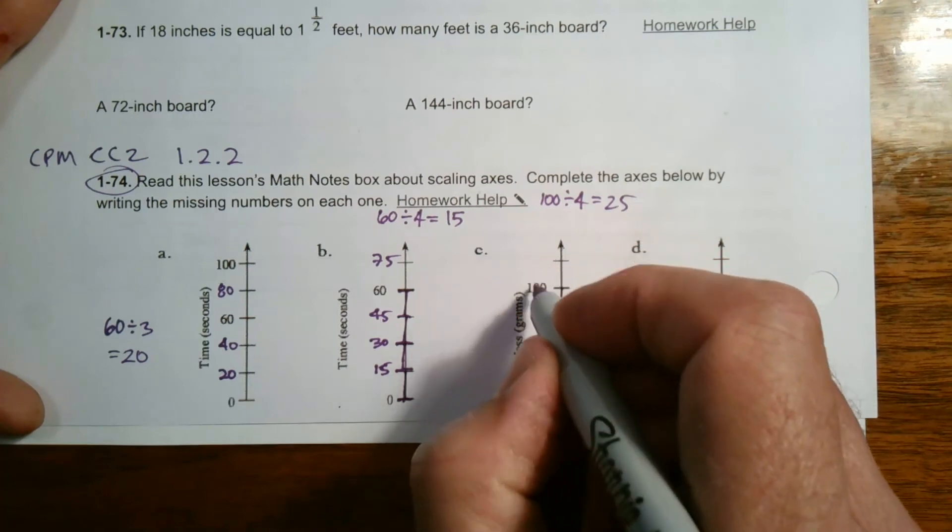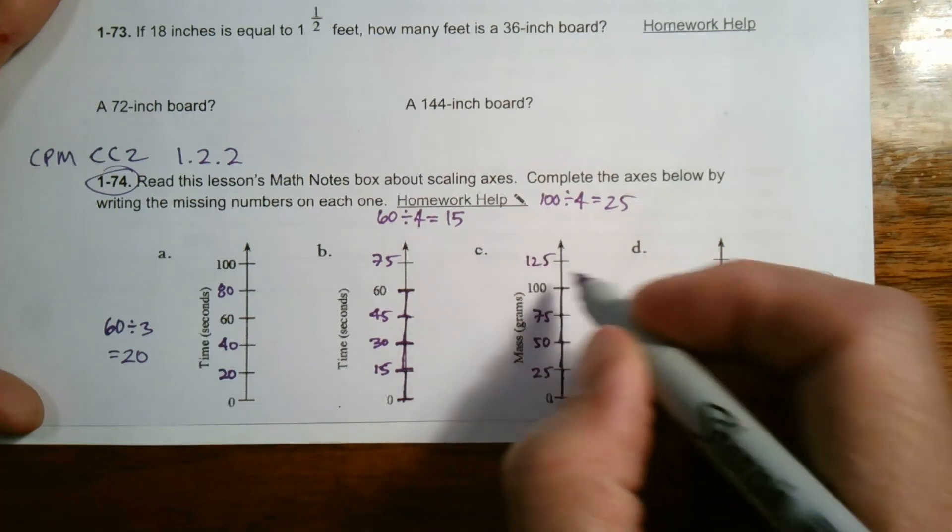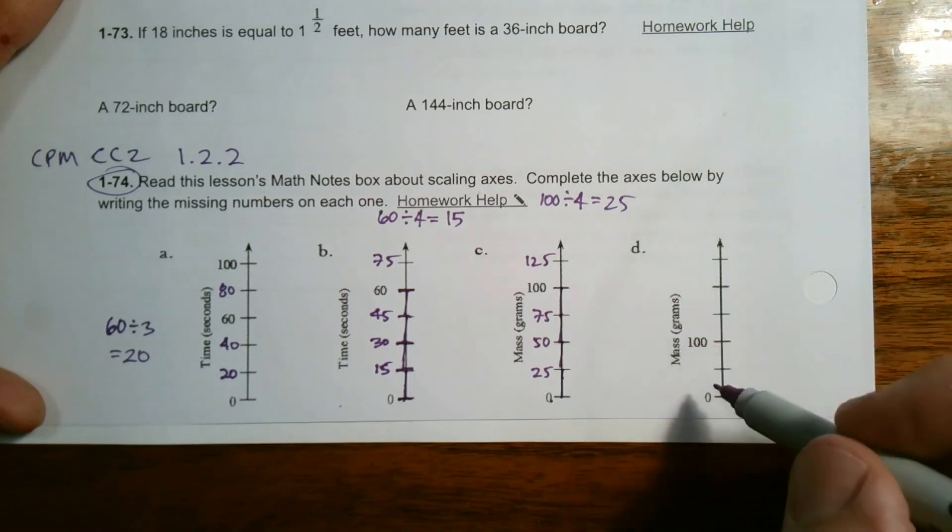And then I just need to finish this off. 100 plus 25 is 125. So each of those now are marked. Last one, D.